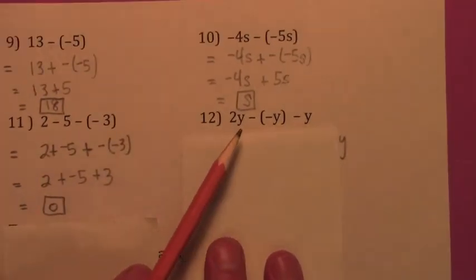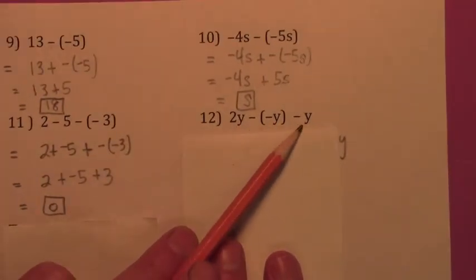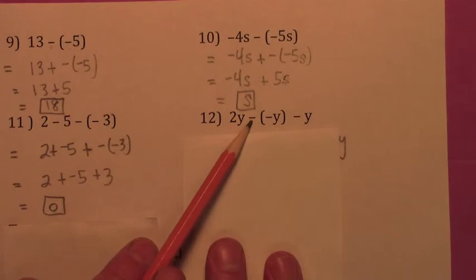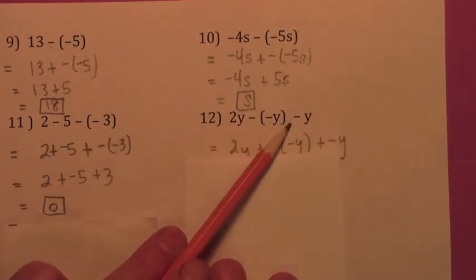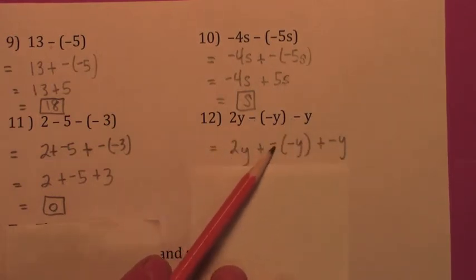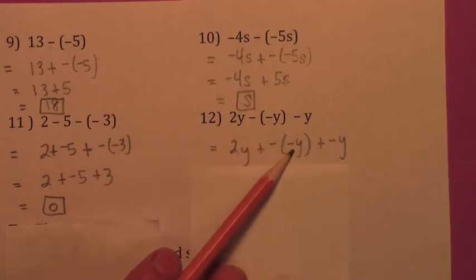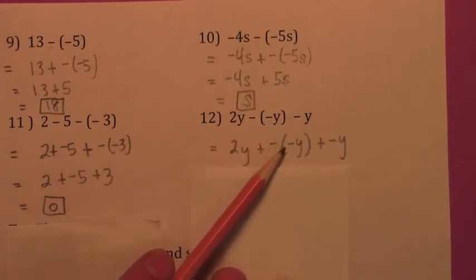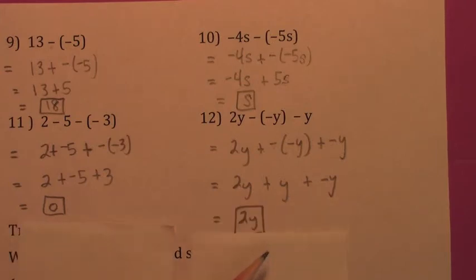Two y minus negative y minus y: the first minus sign changes to plus and negative, the second minus sign changes to plus and negative, but the negative sign stays the same. Get rid of the double negative, and when we add we get two y.